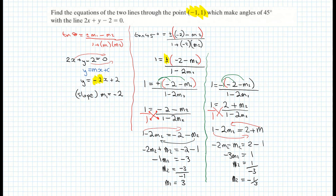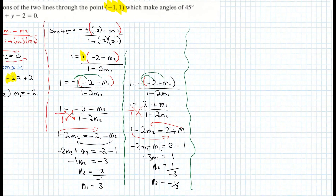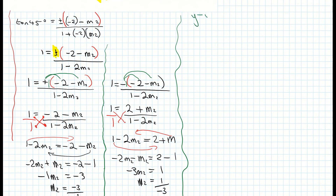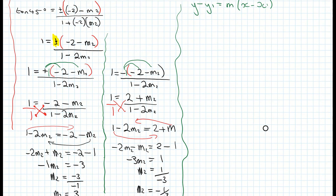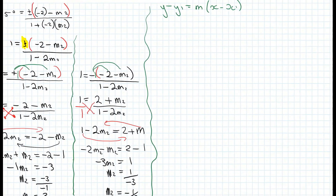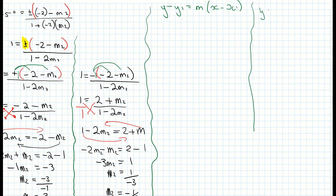I'm using the equation of the line formula from page 18 in the log tables: y minus y1 equals m times (x minus x1). I'll do this for both slopes. For the first equation, I'm using the point (minus 1, 1) and the slope of 3.